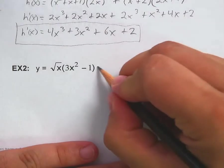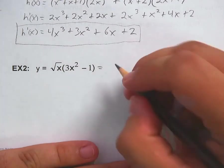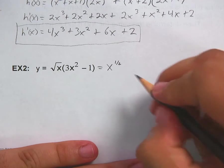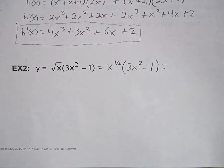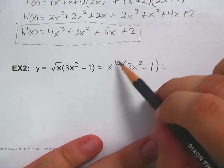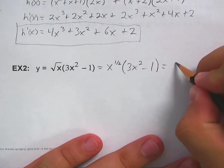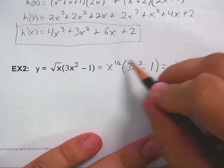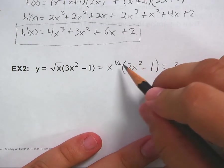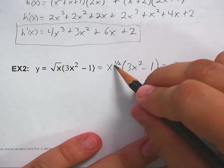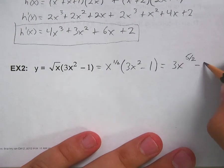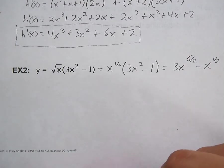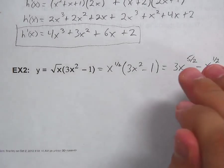For the next example, x times √x — remember √x is x^(1/2) — times (3x² − 1). Since there's only one term outside the parentheses, just multiply it through. x^(1/2) times 3x² gives 3x^(5/2), because 1/2 + 4/2 = 5/2. Then minus x^(1/2). So the expression simplifies to 3x^(5/2) − x^(1/2).